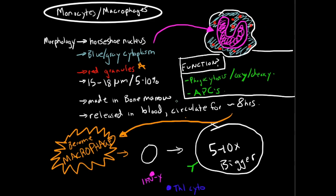Monocytes are made in the bone marrow and released into the blood, where they circulate for about 8 hours. They then differentiate into macrophages, and this differentiation involves several important changes.